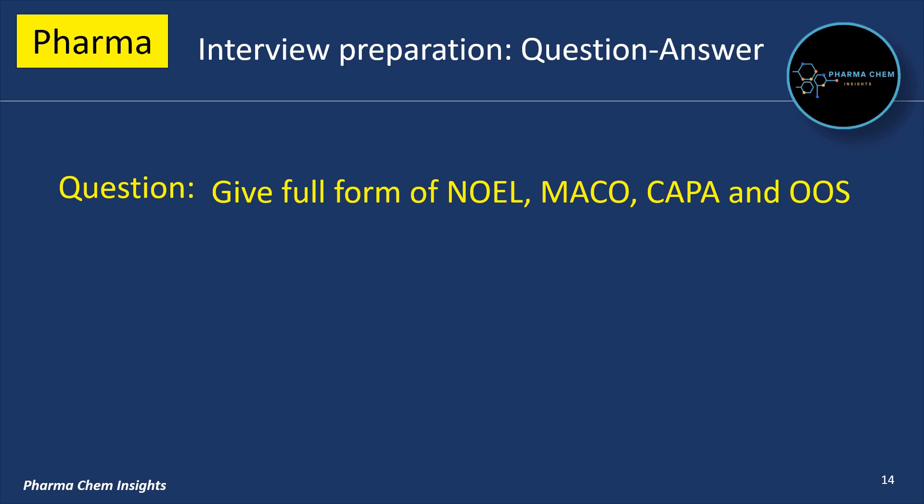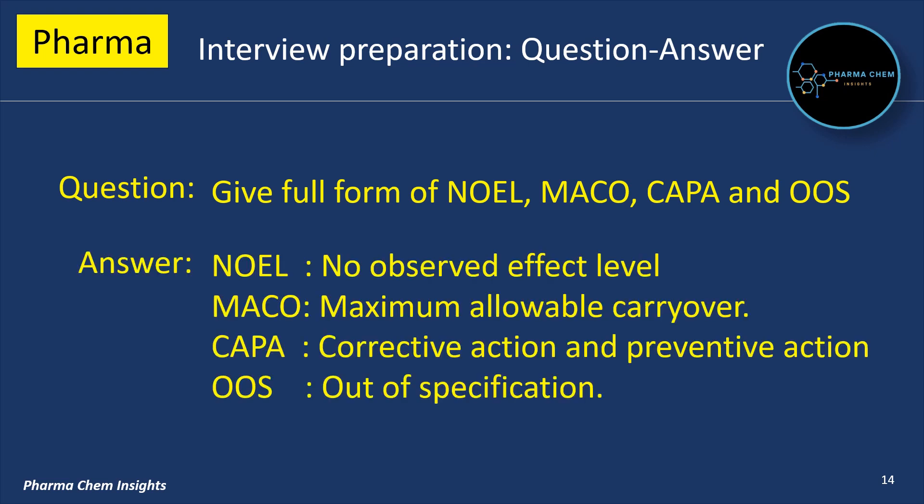Next Question: Give the full form of NOEL, MACO, CAPA and OOS. NOEL is No Observed Effect Level. MACO is Maximum Allowable Carryover. CAPA is Corrective Action and Preventive Action. OOS is Out Of Specification.